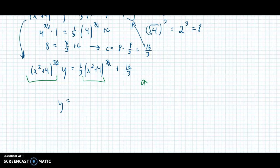I get y is equal to what's left when I divide here, well, I'm just left with the 1 third. So I get 1 third plus, I get 16 over 3 times, x squared plus 4 to the negative 3 halves.